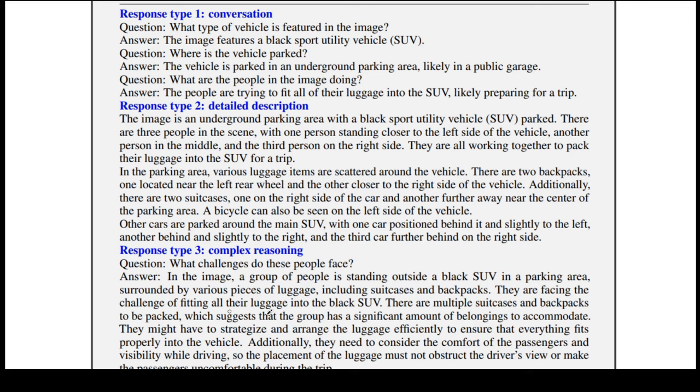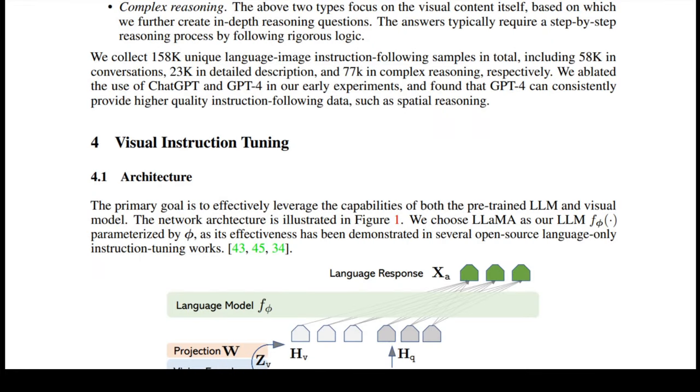So with that process, we can manage to collate a large data set. The authors seem to have collated 158,000 unique combinations of language image instruction following samples, which can be readily used to train the neural network they have proposed.